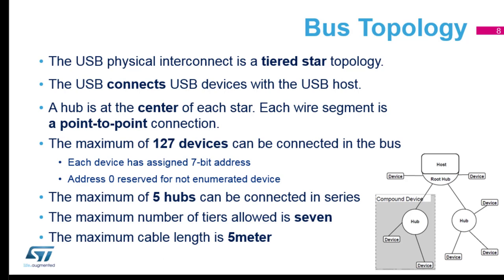Keep in mind that a hub is itself a device, so one address is consumed by it. Maximum number of hubs in series is five — if you have more, the last one won't be recognized. Since it's a serial bus, the bandwidth is shared for everybody starting from the host. Also, the number of tiers (chain load) is seven — meaning you can have no more than seven connections in series.